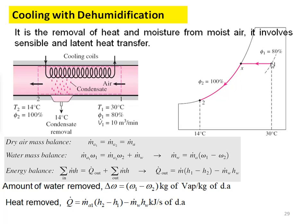On the psychrometric chart, state point one shows air entering the cavity with an initial relative humidity of 80%. Initially, sensible cooling happens from state point one to an intermediate state point. Then as air passes further through the cooling coil, condensation takes place — temperature decreases along with dehumidification, reaching state point two.